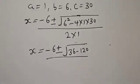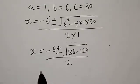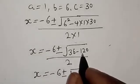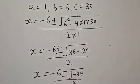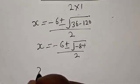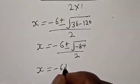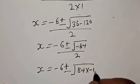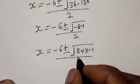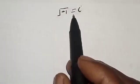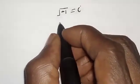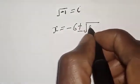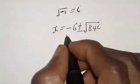We have s equal to minus 6 plus or minus square root of 36 minus 120, over 2. That is minus 84 over 2. Since the discriminant is negative, we write s equal to minus 6 plus or minus square root of negative 84, over 2. We express this as minus 6 plus or minus square root of 84 times i, over 2.